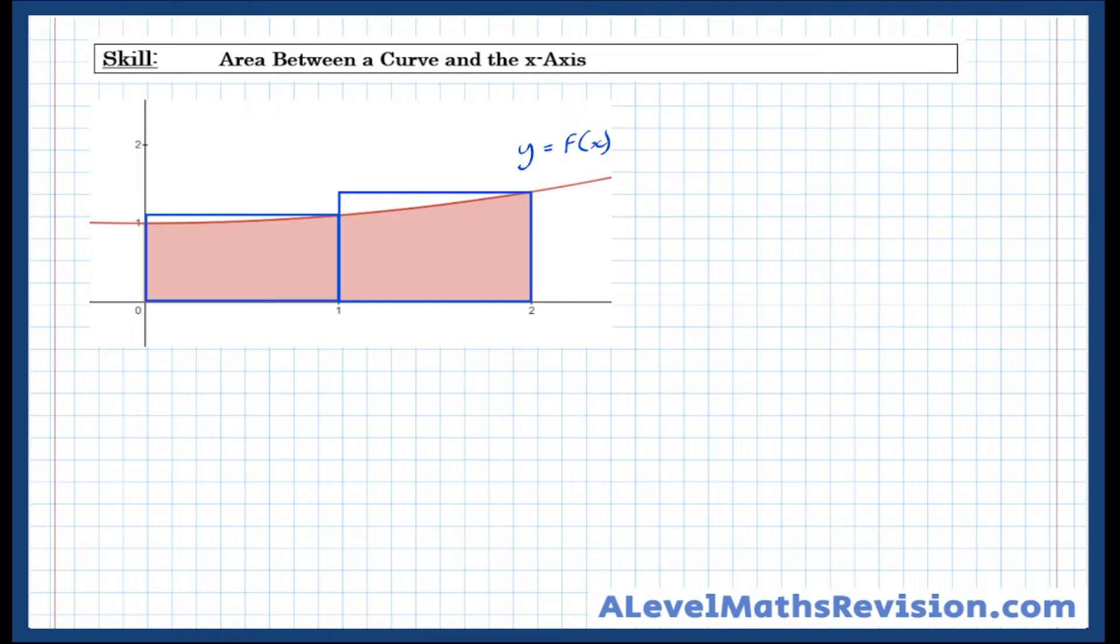So my approximation will actually give extra area leading to an overestimate. So how about if I try using more rectangles? You can see that whilst not perfect still, there's a lot less area above the curve extra. So that's going to give a better estimate.